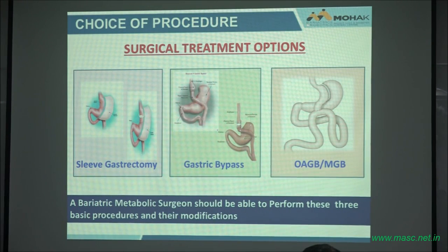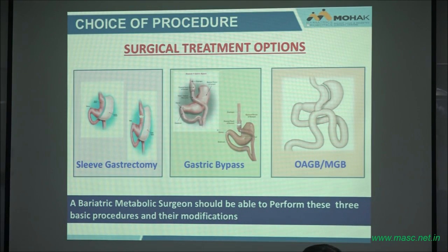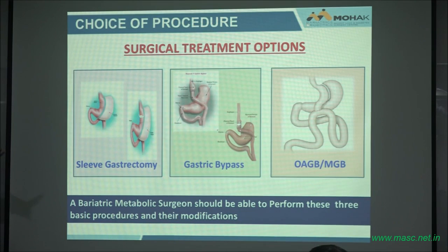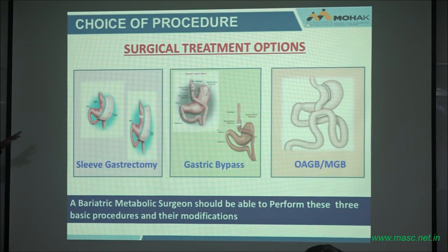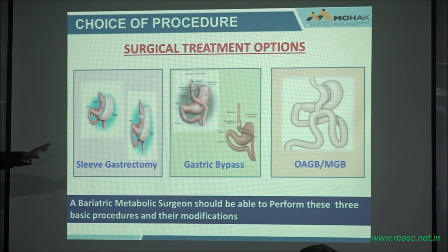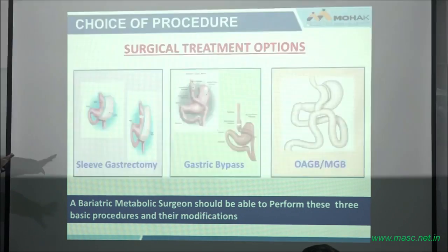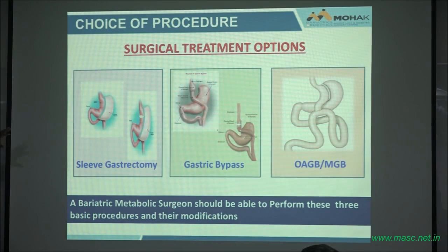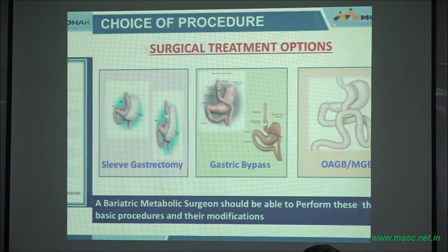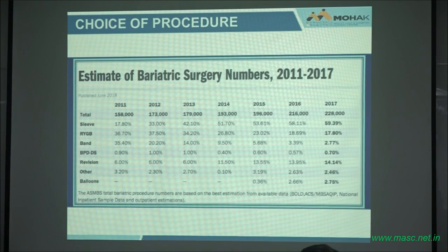I'm not going to discuss all 28 procedures because we don't have time. There are three common procedures currently done worldwide: the sleeve, which is the most common, the gastric bypass, and the one-anastomosis gastric bypass called the MGB. And then there are modifications with putting a band on them. We'll concentrate on these three in terms of procedure choice.